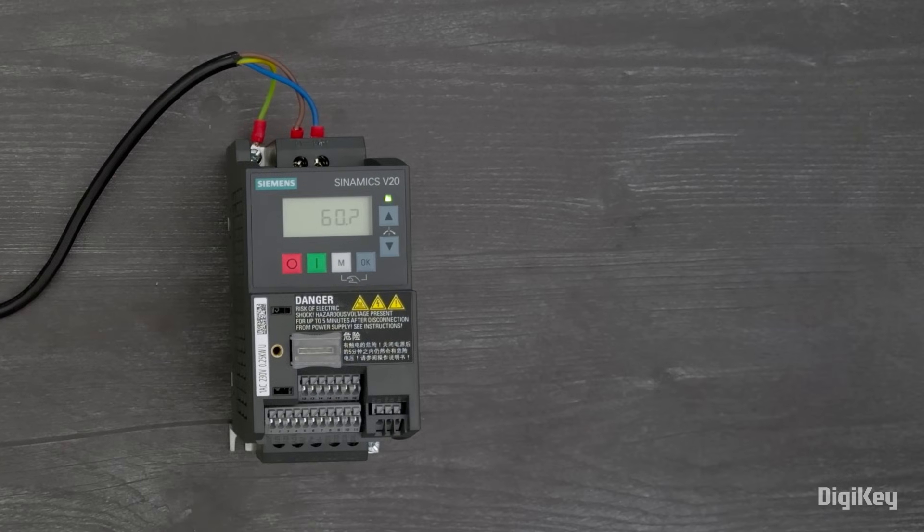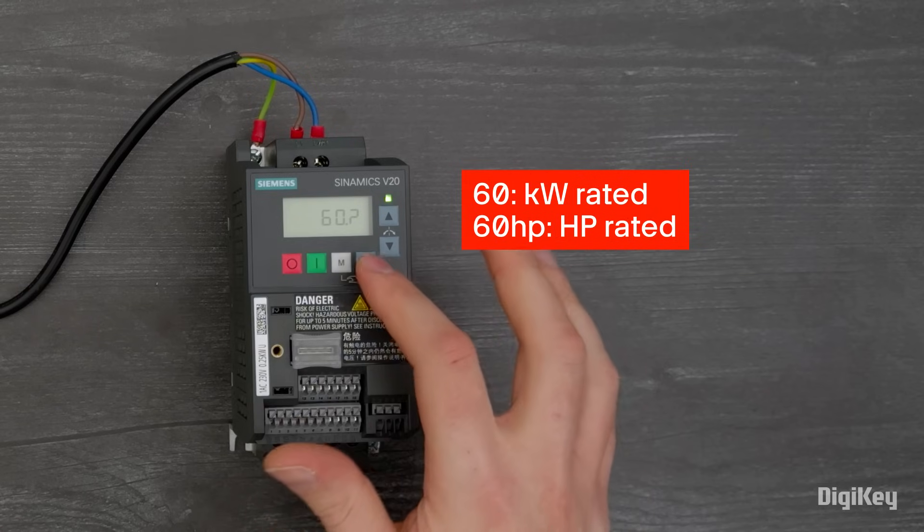At first power-up, you'll select 50 or 60 Hz for the motor-based frequency. For 60 Hz, you'll also select if your motor is rated in horsepower or kilowatts.